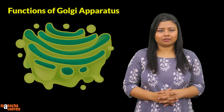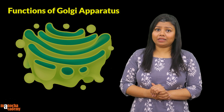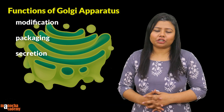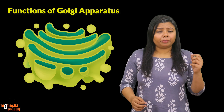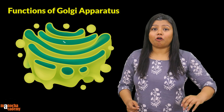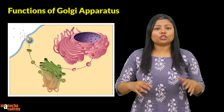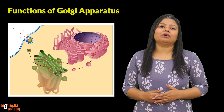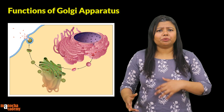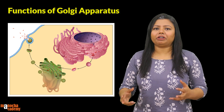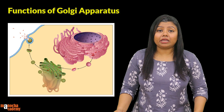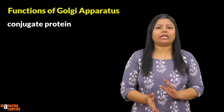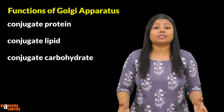The Golgi apparatus has varied functions in different types of cells, but its basic functions are modification, packaging, and secretion of substances. During modification, proteins, carbohydrates, and lipids formed by the endoplasmic reticulum get modified inside the Golgi apparatus — they are folded and modified to give the tertiary structure of protein, or lipid is added to protein, or carbohydrates are added to other structures to form conjugate proteins, conjugate lipids, and conjugate carbohydrates — for example, lipoproteins.